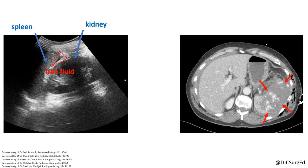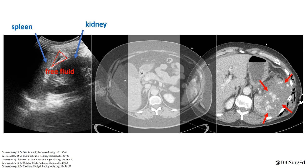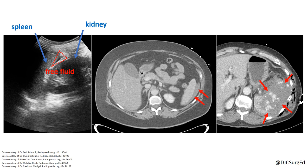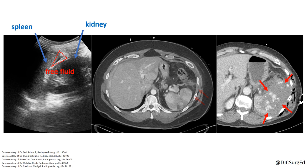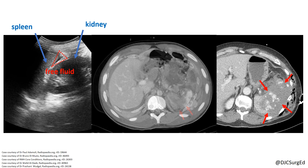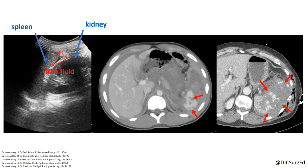CT findings consistent with splenic injury include splenic hematomas, appearing as low density fluid adjacent to the spleen; splenic lacerations, appearing as linear branching hypodensities; and a blush, a hyperdense area representing ongoing bleeding with extravasation of contrast.